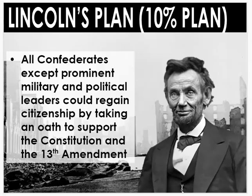First off, we've had Abraham Lincoln's plan. Lincoln's plan is called the 10% plan. Essentially what he said was that anybody who's in one of the rebelling Confederate states can regain their citizenship by taking an oath to support the Constitution and the 13th Amendment, except for prominent military and political leaders. He's saying the blame should be put on those prominent figures — that's where the punishment should be. Any common regular person can regain their citizenship as long as they take an oath to support the Constitution and the 13th Amendment.